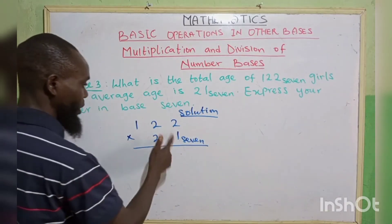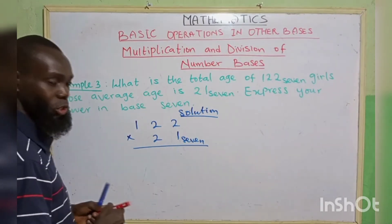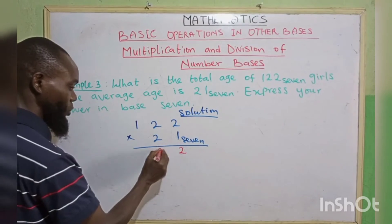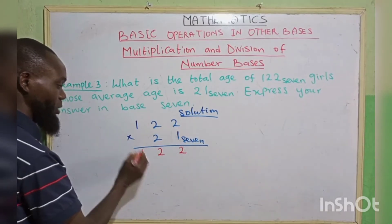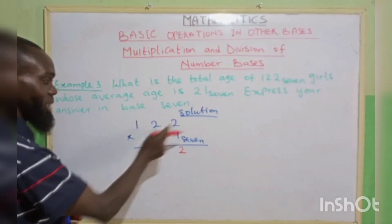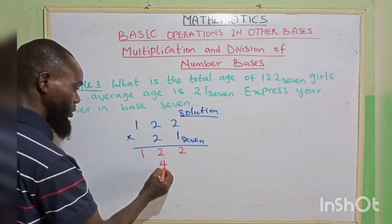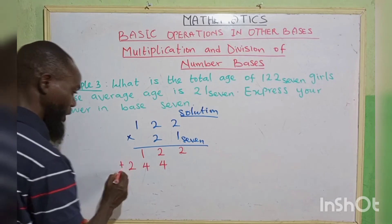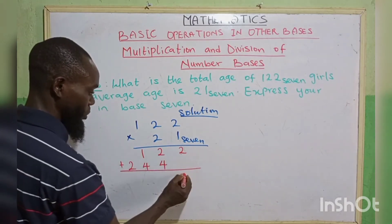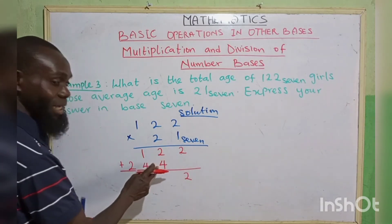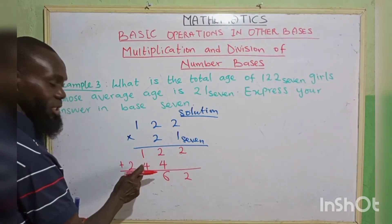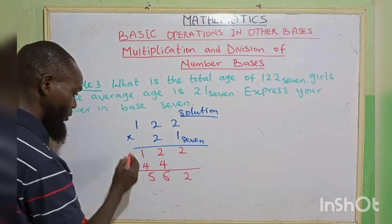So we have 1 times 2, that is 2. It is not up to 7, you write your 2. 1 times 2, that is 2. 1 times 1, 1. They are not up to the base 7. 2 times 2, we have 4. 2 times 2, we have 4. 2 times 1, we have 2. Then we add it up. 2. 2 plus 4, that is 6. 6 is not up to 7. 1 plus 4, that is 5. Then you have your 2.